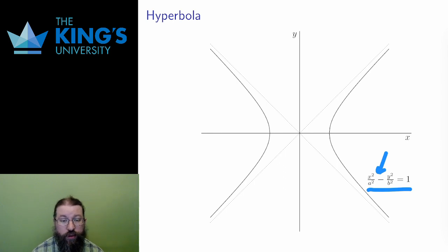The interpretation of the numbers a and b is not quite as immediate for a hyperbola as it was for an ellipse, where the larger was the semi-major axis and the smaller the semi-minor.